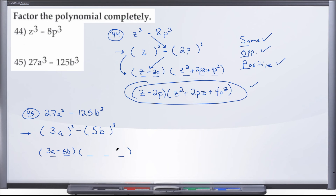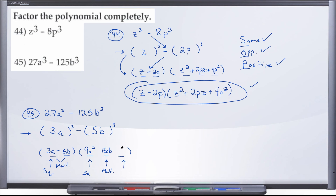To fill in the trinomial, we have three blank spaces. For the first blank, square the first term of the binomial: 3a squared is 9a². For the second blank, multiply the two binomial terms together: 3a times 5b is 15ab. For the last blank, square the final term of the binomial: 5b squared is 25b².